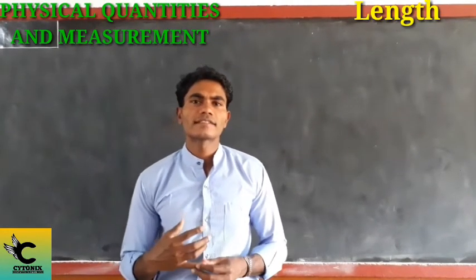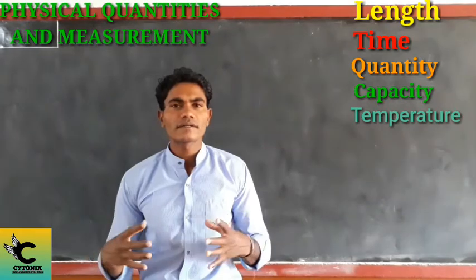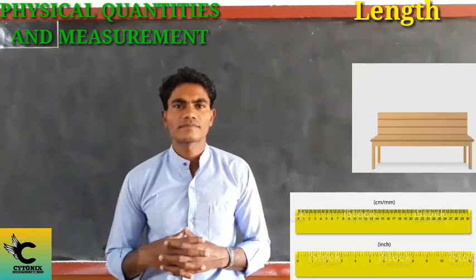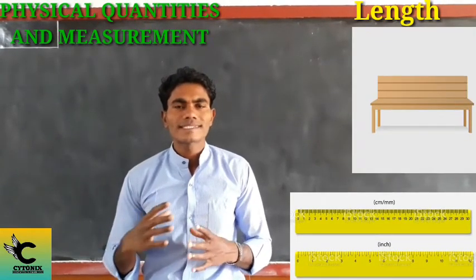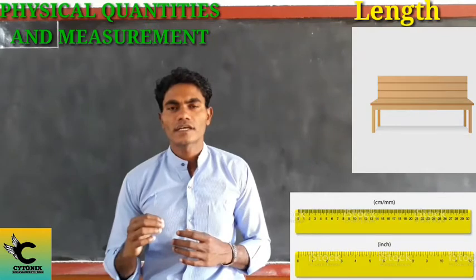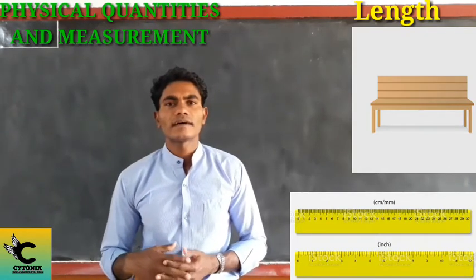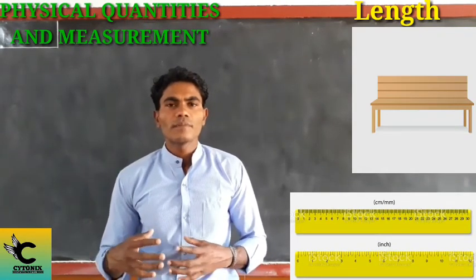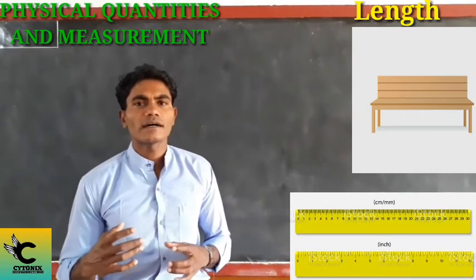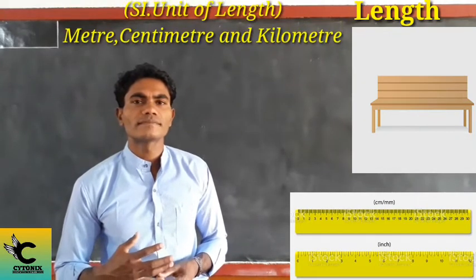Basic units include length, time, quantity, and capacity. For measuring length — of a scale, bands, or rope — we use standard units. The scale or band may be short, long, big, or small. For measuring length, we use standard units such as meter and centimeter, as shown on the screen.